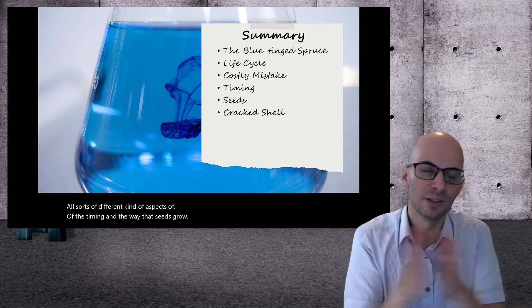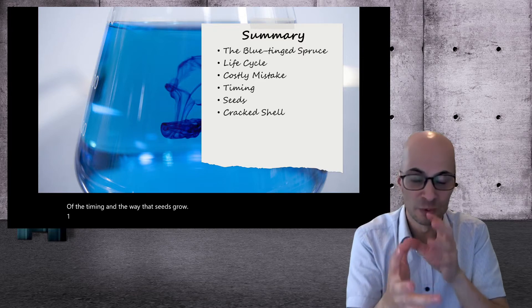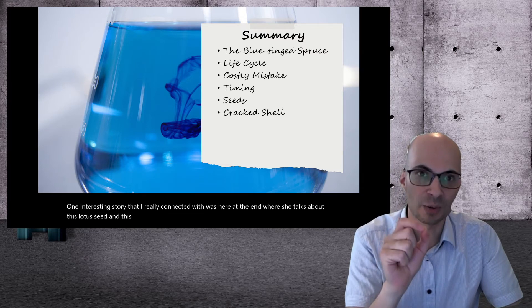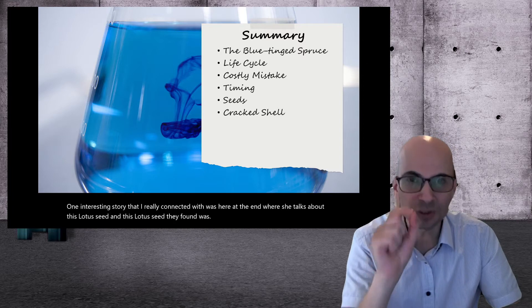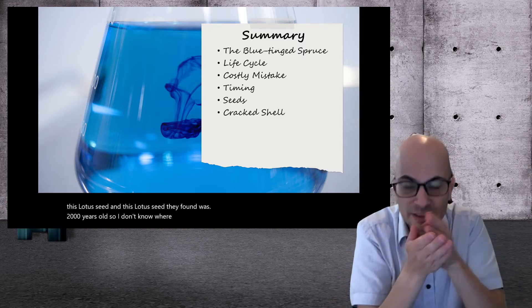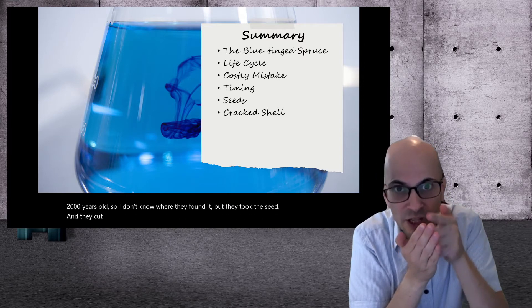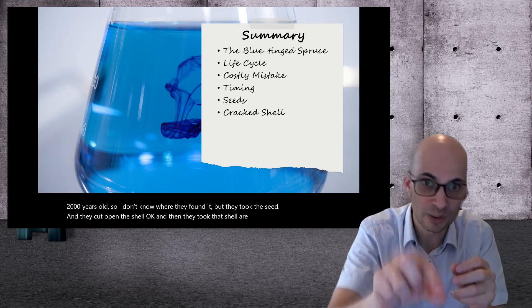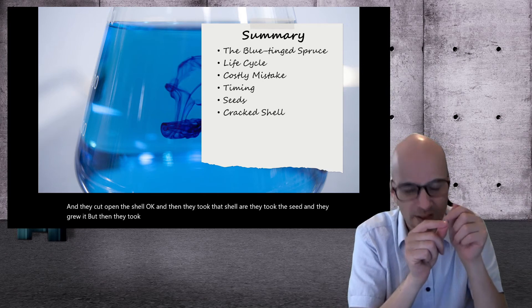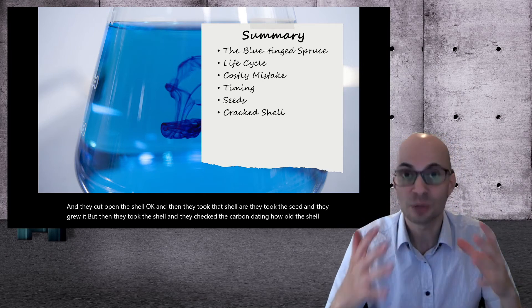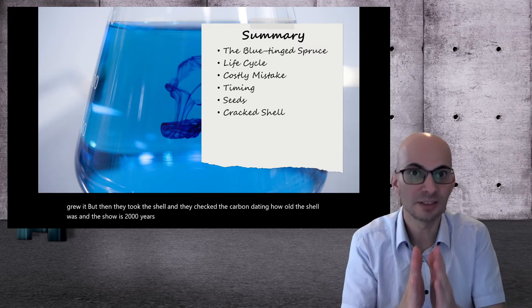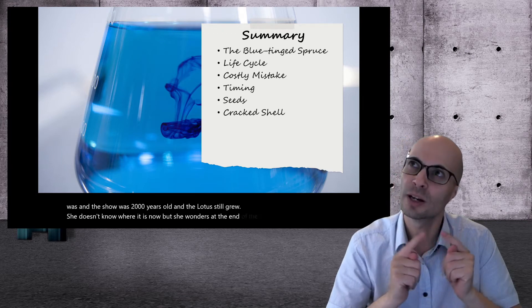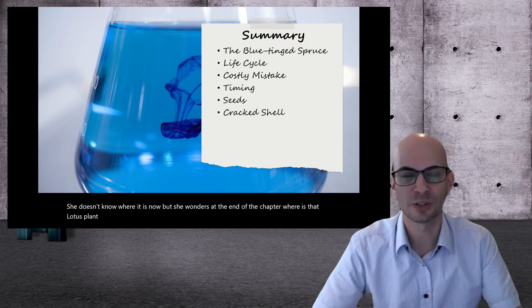Well, one interesting story that I really connected with was here at the end where she talks about this lotus seed and this lotus seed they found was 2,000 years old. So I don't know where they found it, but they took the seed and they cut open the shell. And then they took the seed and they grew it, but then they took the shell and they checked carbon dating how old the shell was. And the shell was 2,000 years old and the lotus still grew. She doesn't know where it is now, but she wonders at the end of the chapter. Where is that lotus plant now? And that is how chapter three ends.